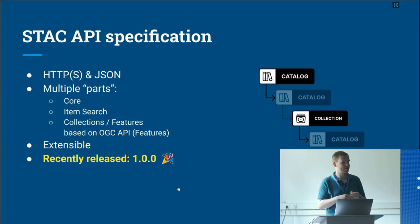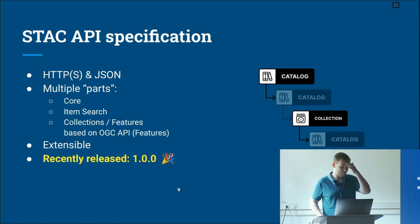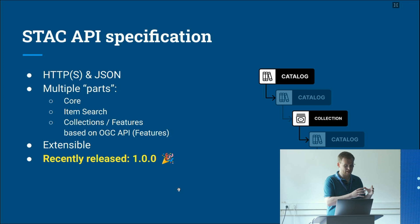The STAC API specification was recently released as version 1.0 — that took about two more years than the STAC specification itself, partly waiting on the OGC API counterparts we build on top of. It's now available as a stable release, so go ahead and implement it. It's built on HTTP and JSON, with multiple parts: the extensions are extracted into separate repositories, and the API itself has core, item search, collections, and features.